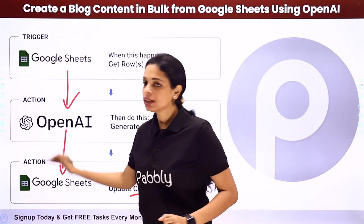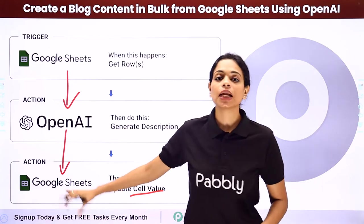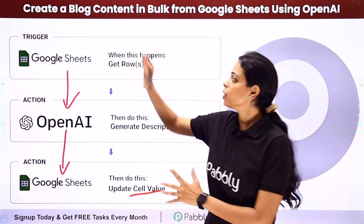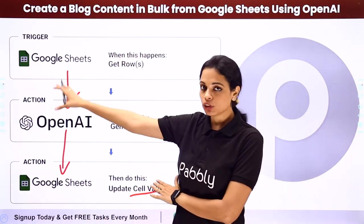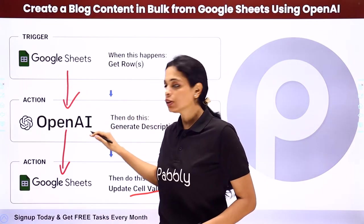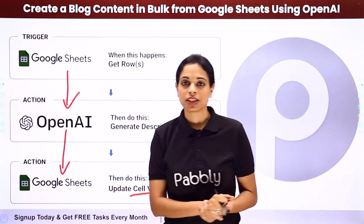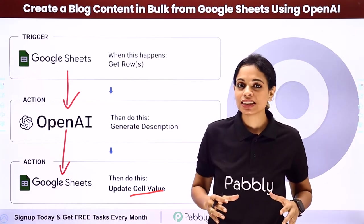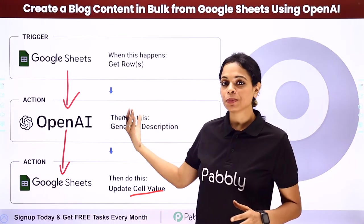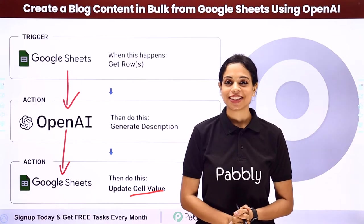You can integrate Google Sheets with OpenAI which will help you for content creation, and then you have to connect it with the same Google Sheet so that the values can be updated. For this you will have to integrate these three applications, and the same can be done using Pabbly Connect software. Your trigger application would be Google Sheets, your action application would be first OpenAI and then again Google Sheets. Let me take you to my screen.